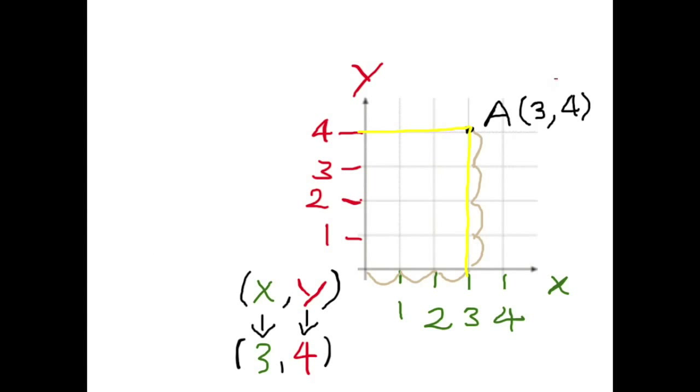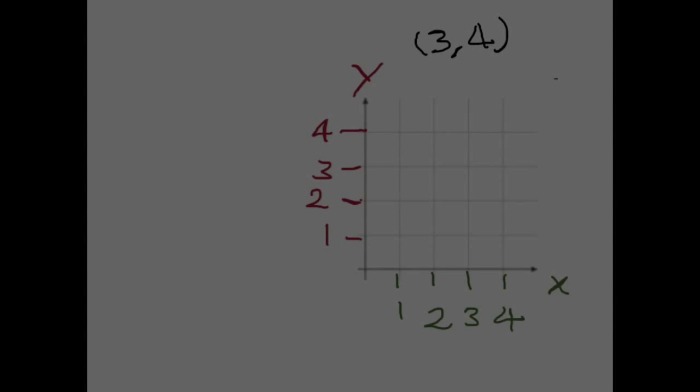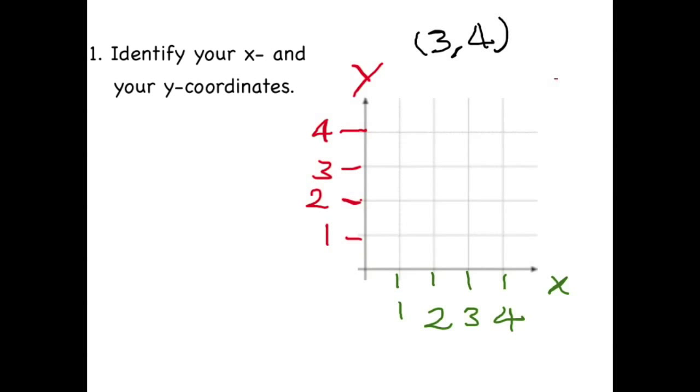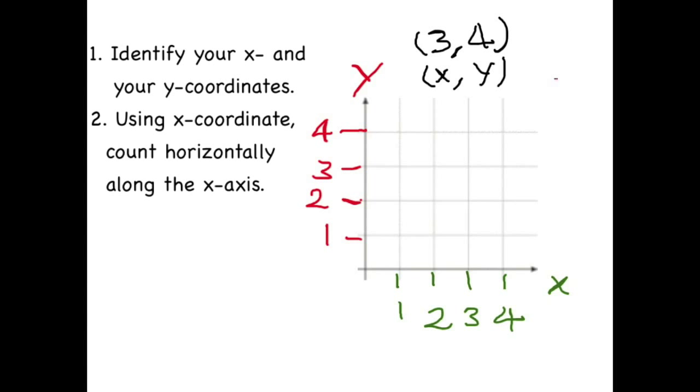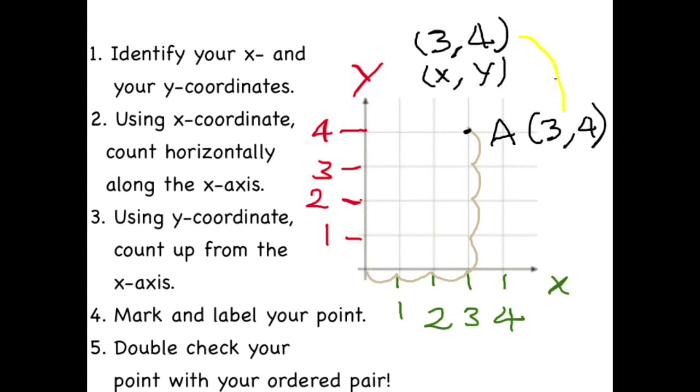Now that we've plotted our first point, let's review the steps we took. Number 1, identify your X and your Y coordinates. Number 2, start with your X coordinate and count horizontally along the X axis. Number 3, using your Y coordinate, count up from the X axis. Number 4, mark and label your point. Number 5, double check your point with your ordered pair.